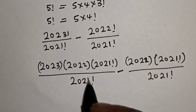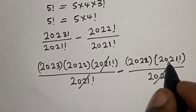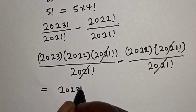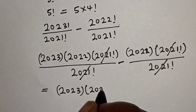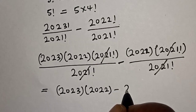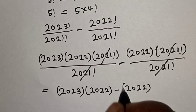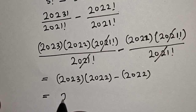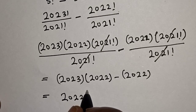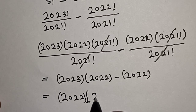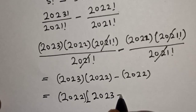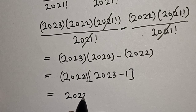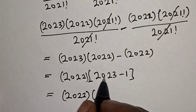Minus: 2022 factorial can be written as 2022 multiplied by 2021 factorial, over 2021 factorial. The 2021 factorials cancel out. This gives us 2023 multiplied by 2022, minus 2022. We can see that 2022 is common, so this equals 2022 multiplied by (2023 minus 1), which is 2022 multiplied by 2022.